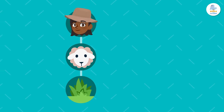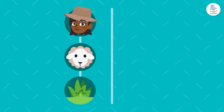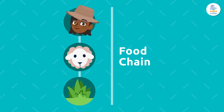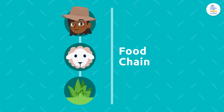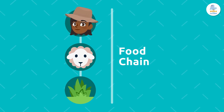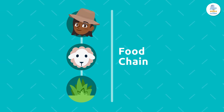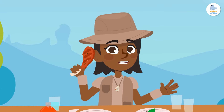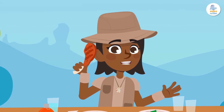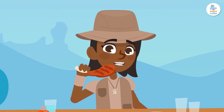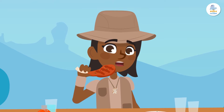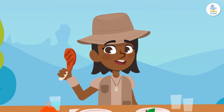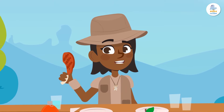The way energy passes from one living thing to another is called a food chain. Have you ever heard of food chains? We are going to look at them now, but I'm getting a little hungry, so first I'm going to take a bite of my lamb chops.